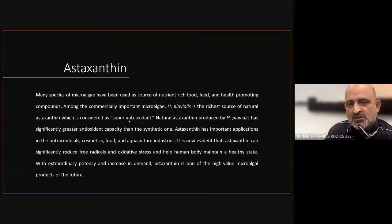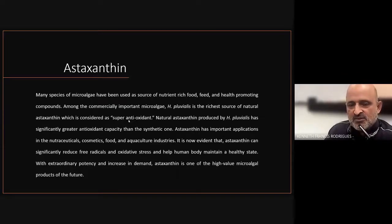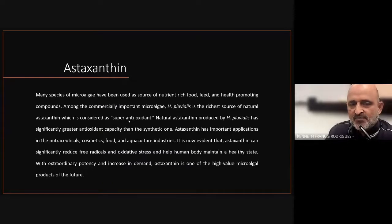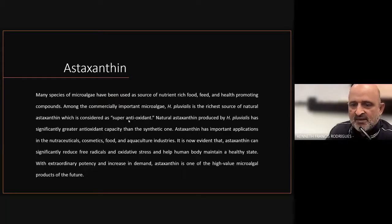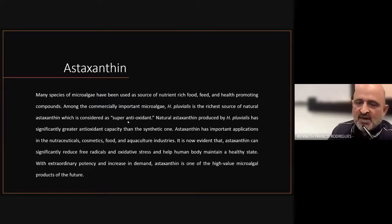Astaxanthin is one of the compounds which is a super antioxidant, and it is difficult to produce using synthetic approaches. This is why Haematococcus pluvialis has become the primary source of astaxanthin. Astaxanthin has applications in nutraceuticals, cosmetics, food, and the aquaculture industries. It forms a component of aquaculture feed and is responsible for the red coloration of fish or shrimp. It also has the ability to reduce free radicals and oxidative stress and maintain the human body in a healthy state, giving it high demand in biotechnological value.